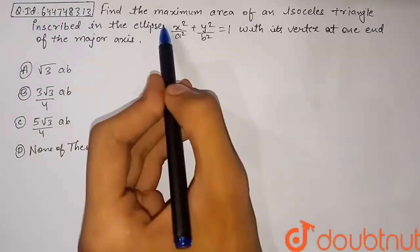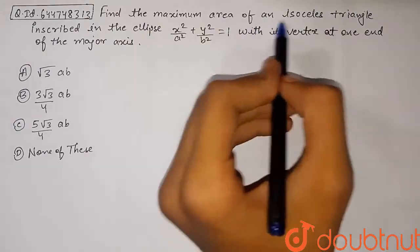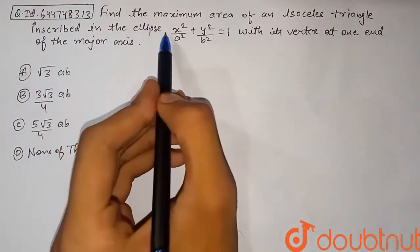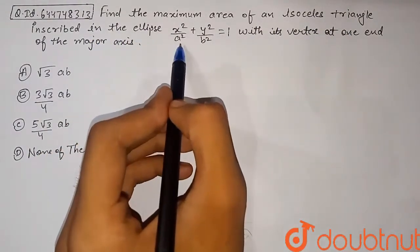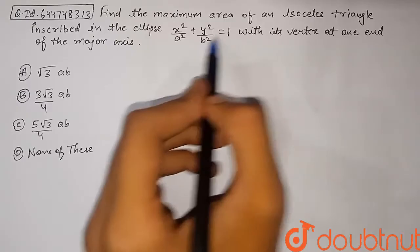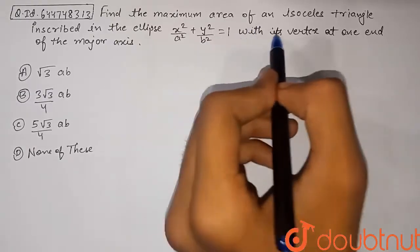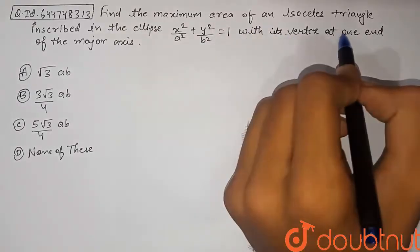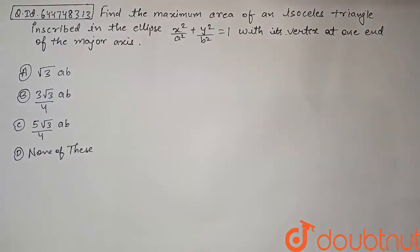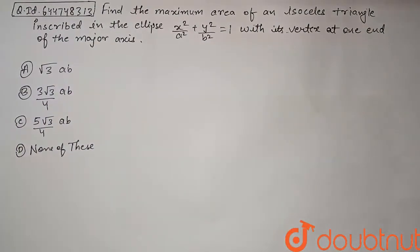Find the maximum area of an isosceles triangle inscribed in the ellipse x²/a² + y²/b² = 1, with its vertex at one end of the major axis. Let's begin with the solution of this question.